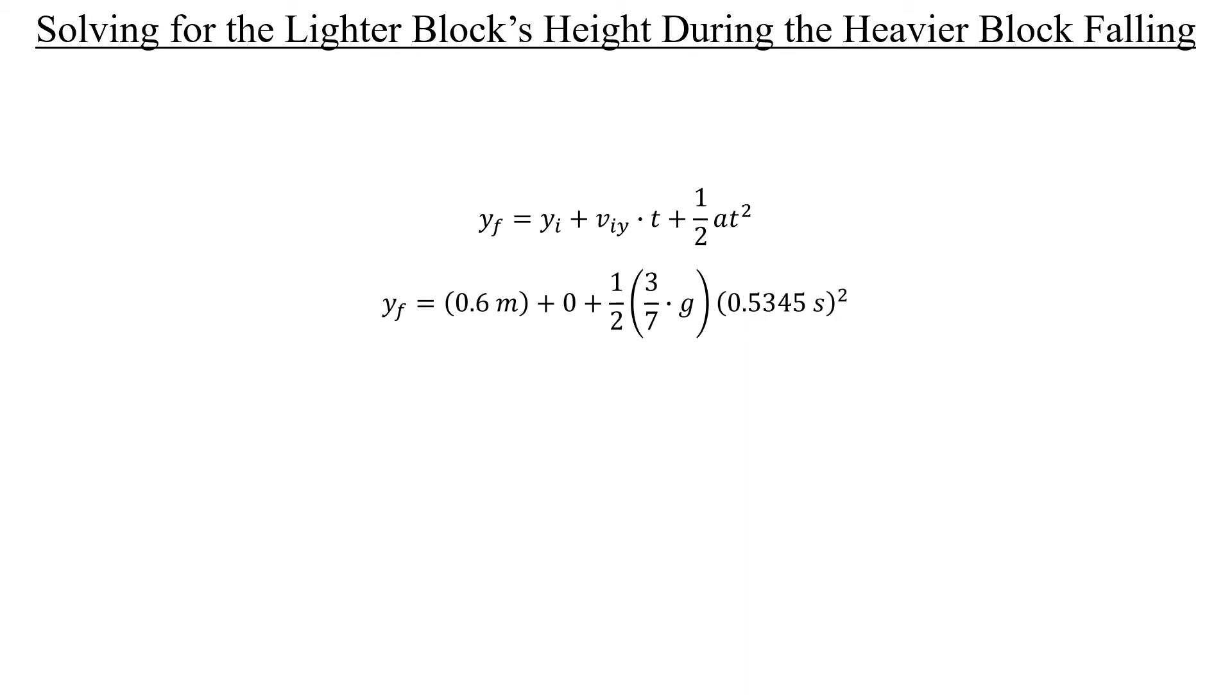And we don't know what the final height of the lighter block will be, so we leave that alone. That's what we want. The lighter block started at 0.6 meters, and so that's the initial height there. Again, the block was released from rest, so there's no initial velocity in the y direction. That turns to 0. And I've plugged in the same expression for the acceleration, but I left the positive, because for the lighter block, the acceleration is in the positive direction. And here is the time that the other block has fallen for.